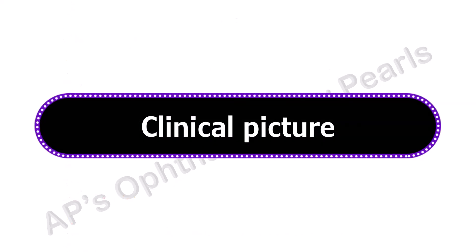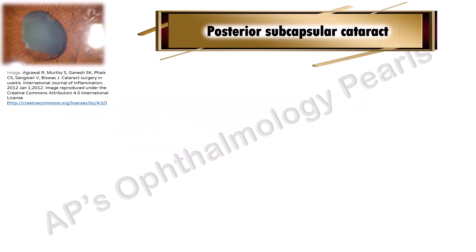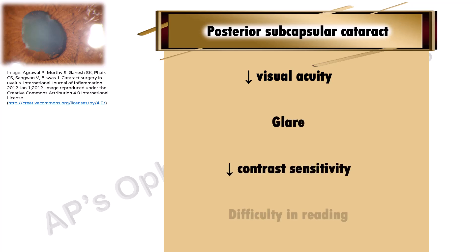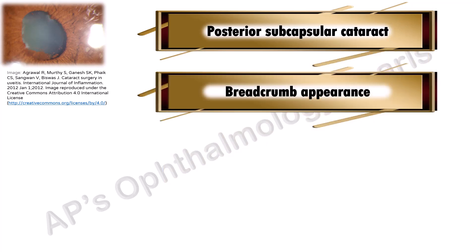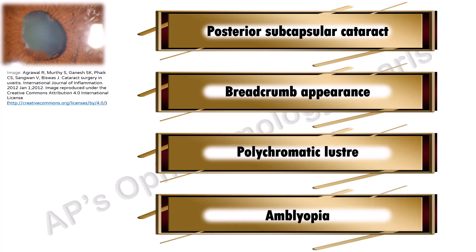The clinical picture: a complicated cataract is usually a posterior subcapsular cataract. This results in significant visual disability because of its situation near the nodal point of the eye, in the form of diminished visual acuity, glare, diminished contrast sensitivity, and difficulty in reading. Breadcrumb appearance is seen on slit-lamp examination. A polychromatic luster — a characteristic rainbow display of colors — may be seen, and amblyopia can occur if the diagnosis of a complicated cataract has been missed in a child with active uveitis, as in juvenile rheumatoid arthritis.